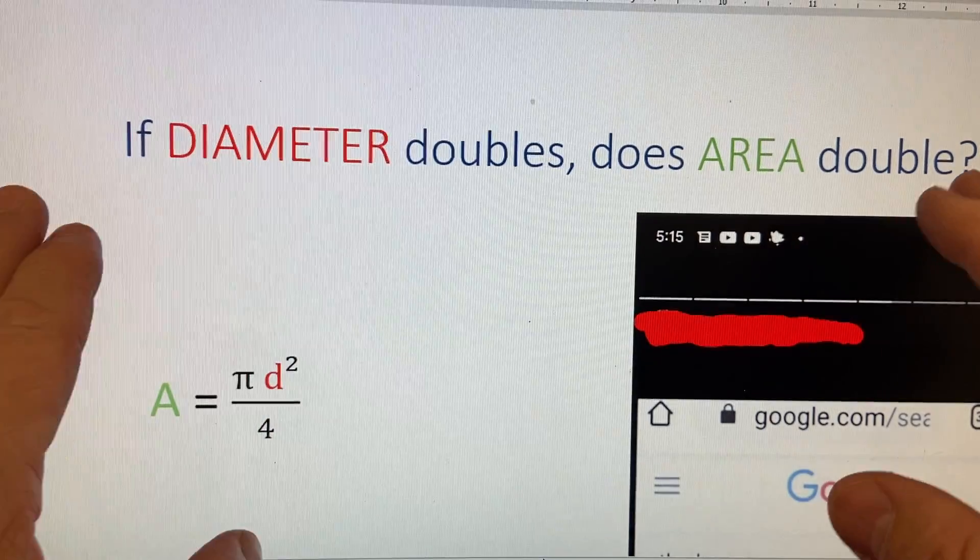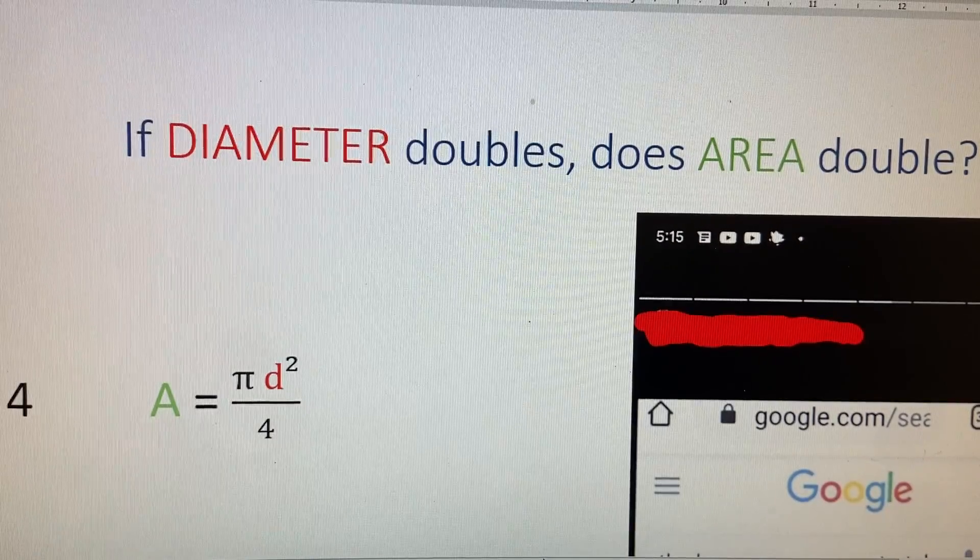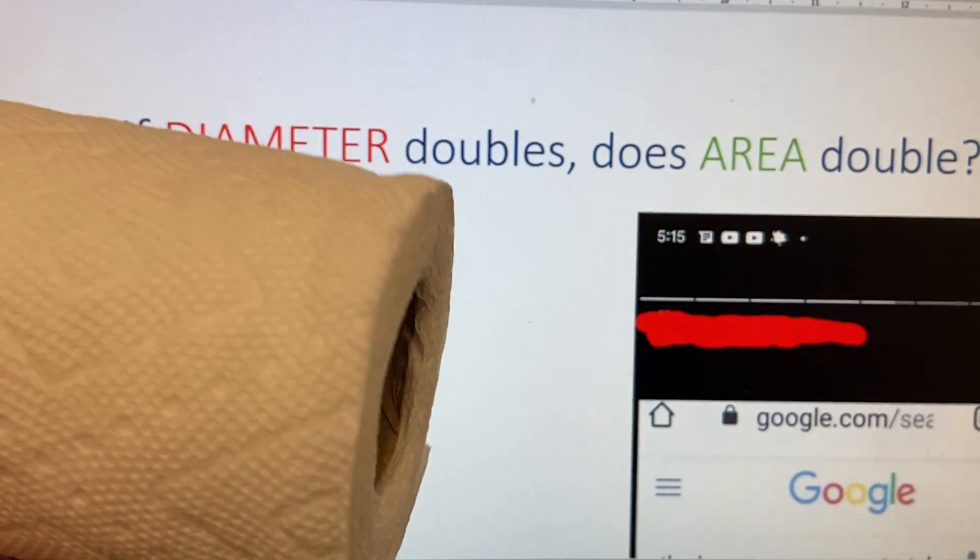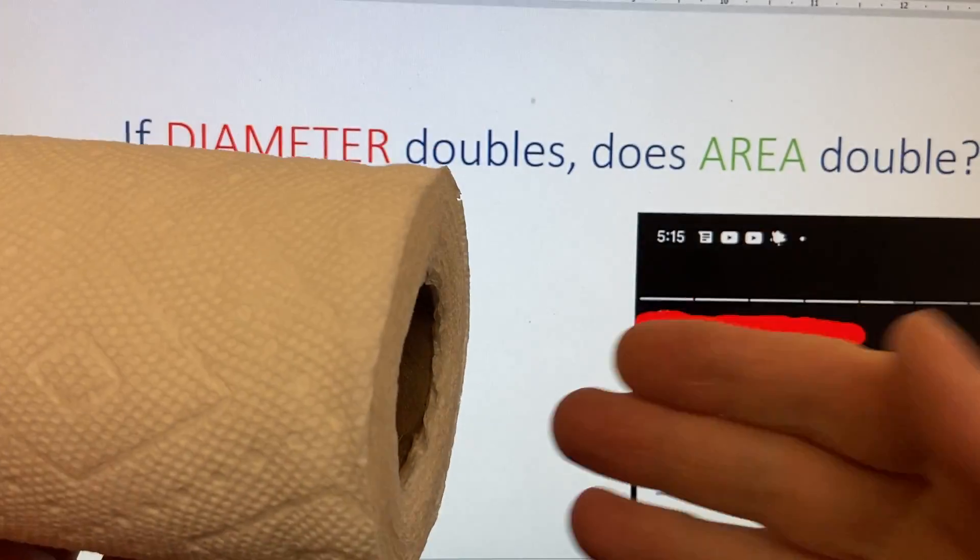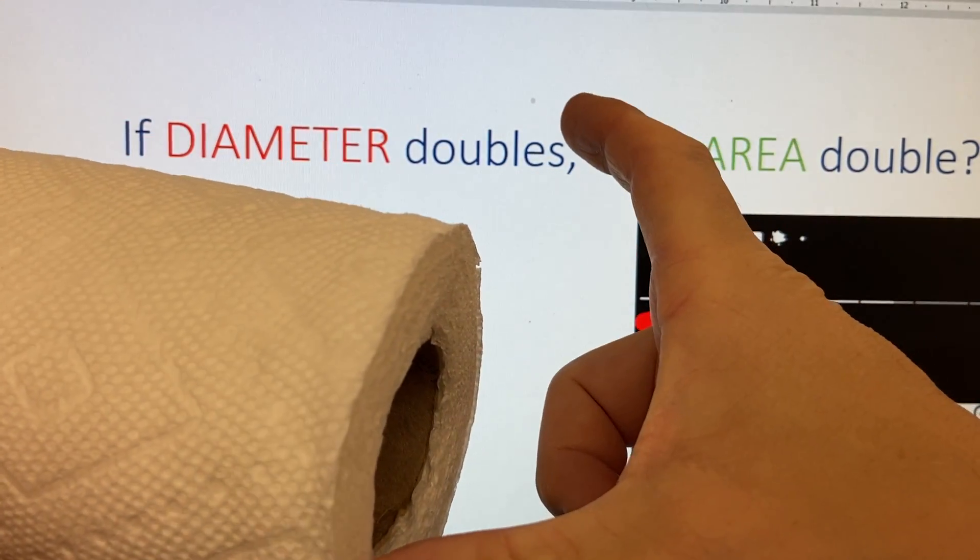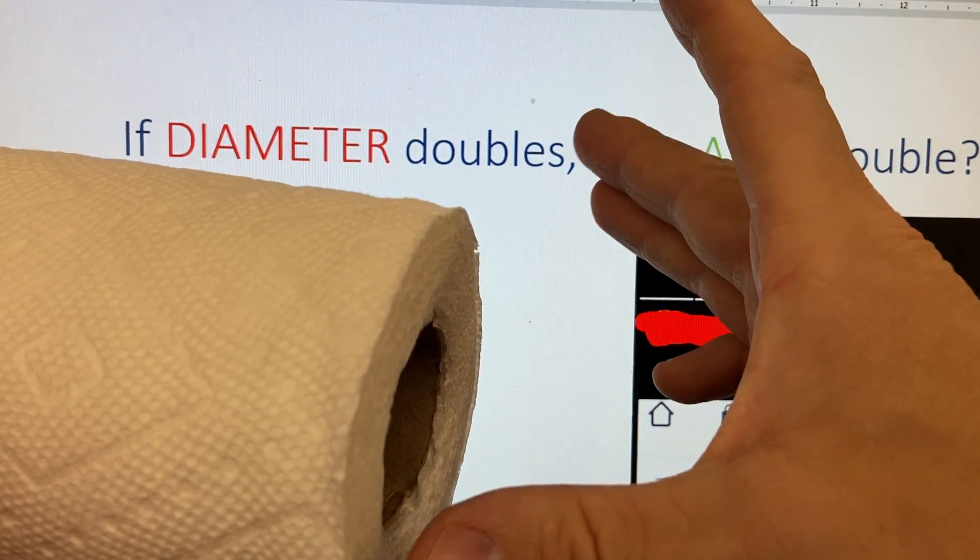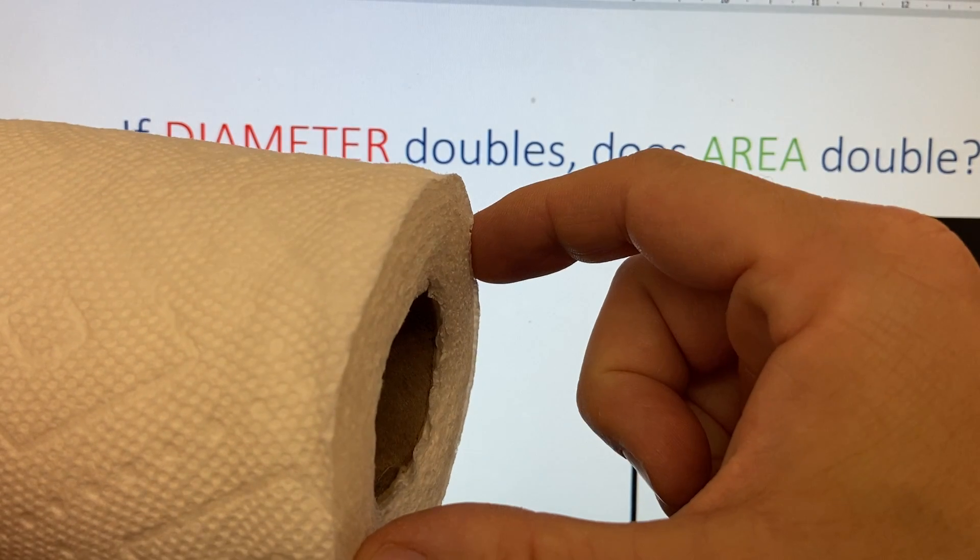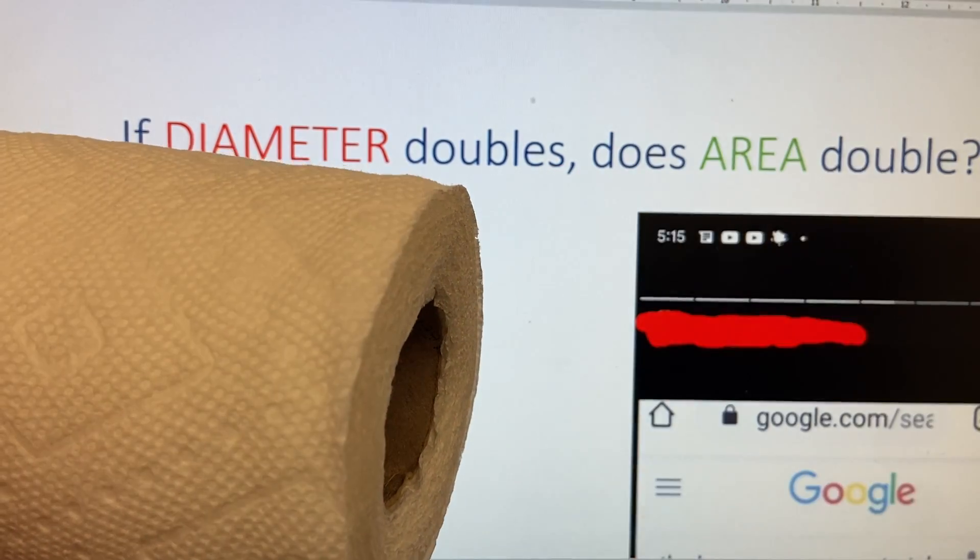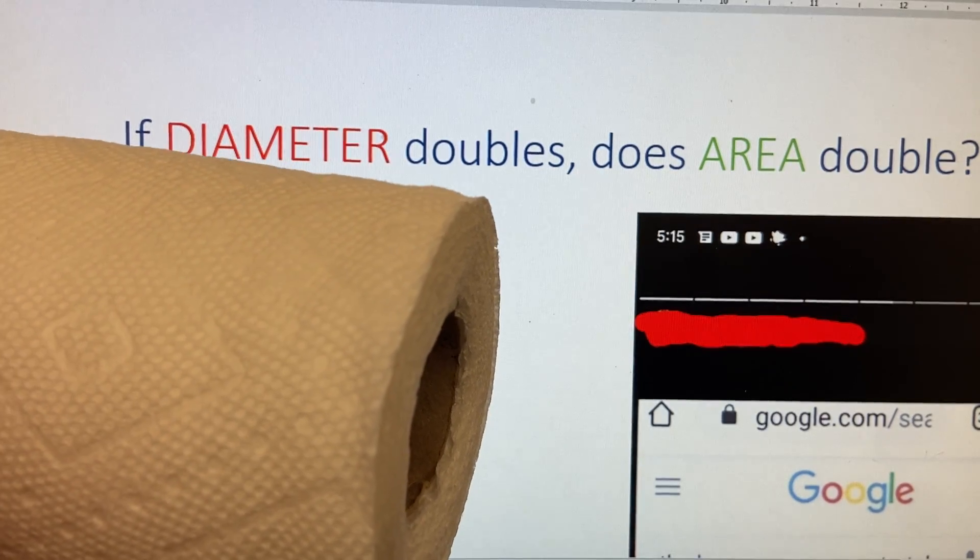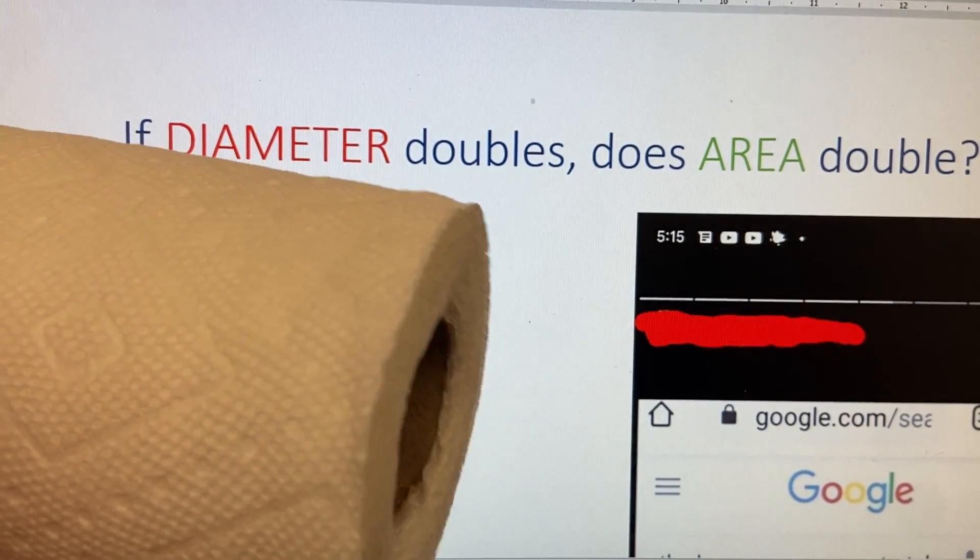This also applies, this circle problem applies to the piping trades. So pipe fittings, sprinkler fitting, you name it. If you replace a 6 inch diameter pipe with a 12 inch diameter pipe, the flow in the 12 inch diameter pipe will be way more than double the flow in a 6 inch pipe. So it's not double, it's not a number. I'll show you what number that is.